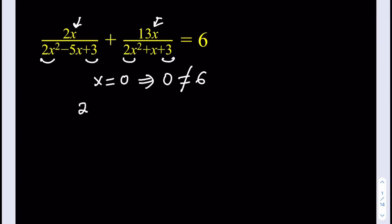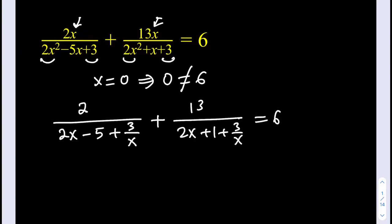If I divide the numerator by x, I'm going to be getting 2 from here. And at the bottom, I'm going to be getting 2x minus 5 plus 3 over x. And the other one is going to give me 13 divided by 2x plus 1 plus 3 over x. And obviously, the right-hand side is going to stay the same.